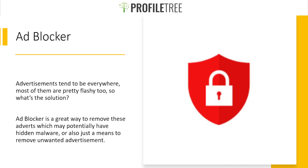Starting off, we've got Ad Blocker Ultimate. Advertisements tend to be everywhere and most of them are pretty flashy. Ad Blocker Ultimate is a great way to remove adverts which may potentially have hidden malware, or it can simply be used to remove unwanted advertisements and clear up your desktop. Sometimes adverts can slow down your computer depending on your specs, so using an ad blocker to remove all the unnecessary advertisements — which may also have hidden viruses — is a great solution.